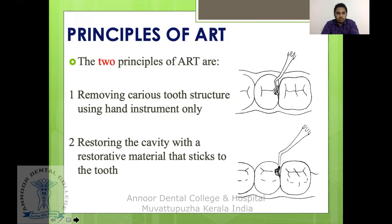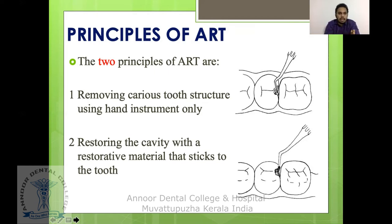The principles of ART are very simple — there are only two. First: removal of carious tooth structure using hand instruments only. Second: restoring the cavity with a restorative material that adheres chemically to the tooth. These are the two fundamental principles of ART.